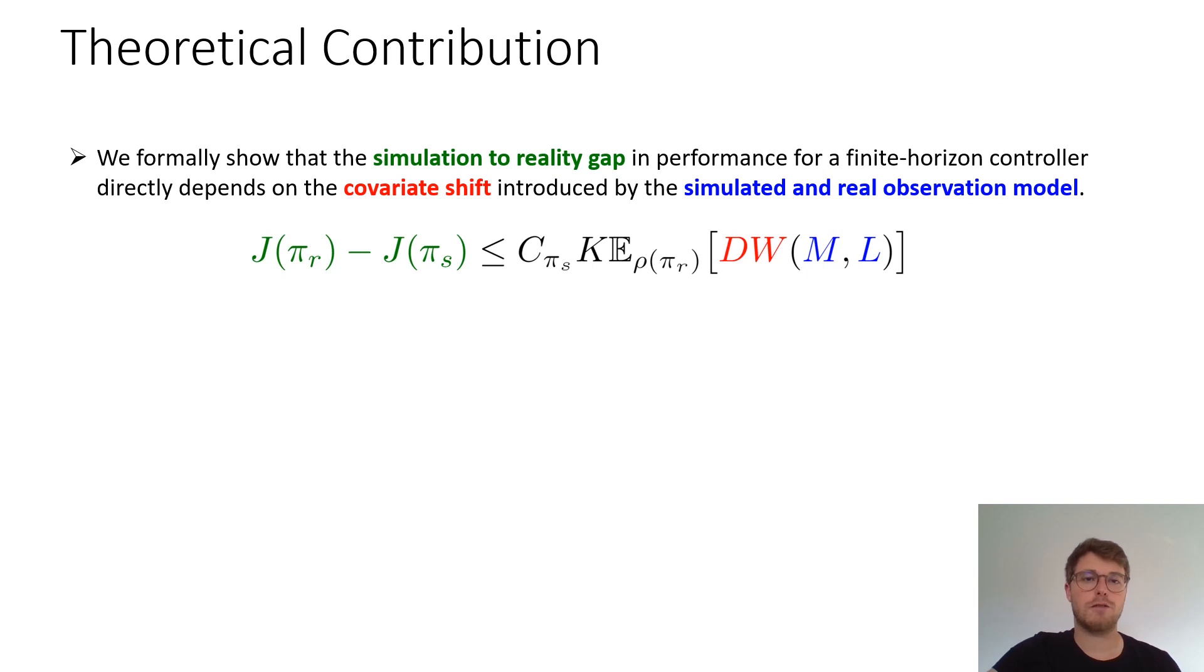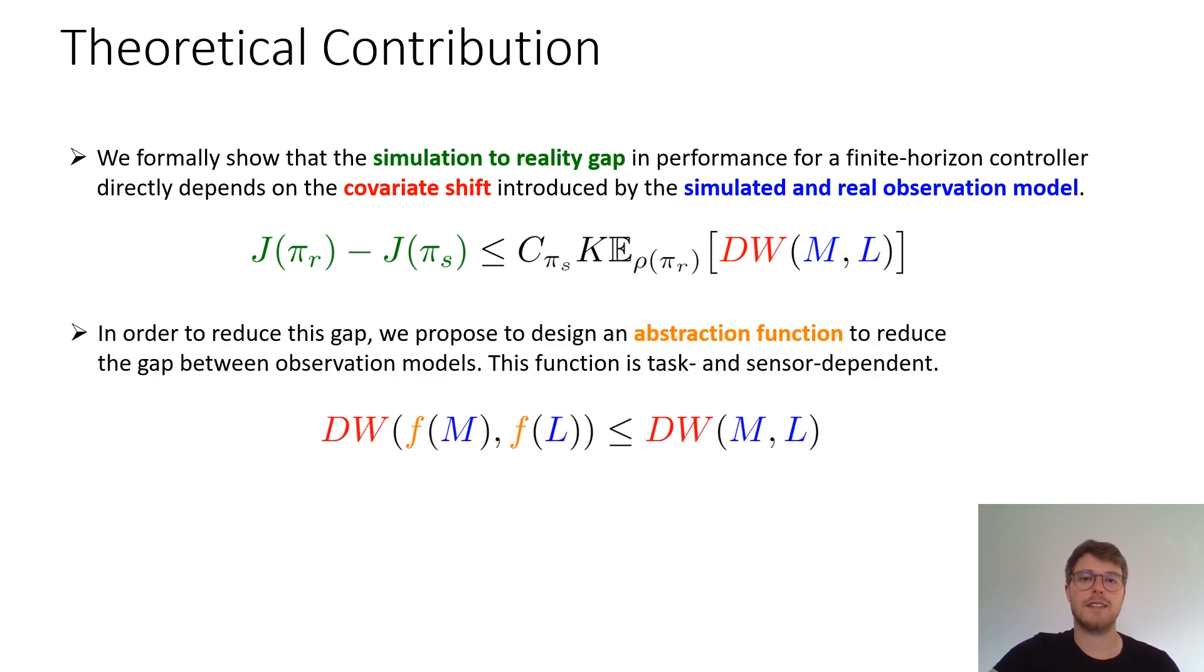In this work we take a different approach. Instead of trying to match the observation models we transform them with an abstraction function f such that their Wasserstein distance decreases.